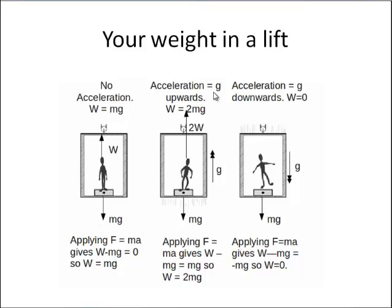If you're accelerating due to g upwards, that changes the situation dramatically. What will happen is that if we apply F = ma, that means that W − mg = mg. So if we're accelerating upwards, your apparent weight is going to be two times mg. We can imagine when going upwards in a lift, you feel like you're being pushed down a little bit more.